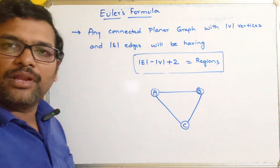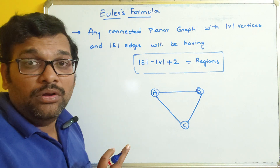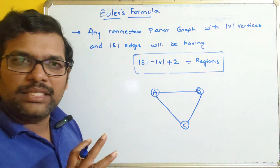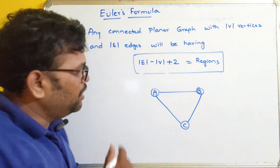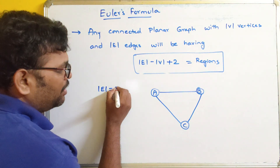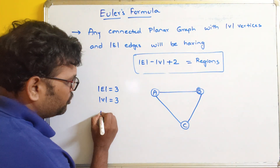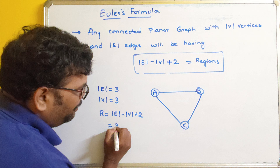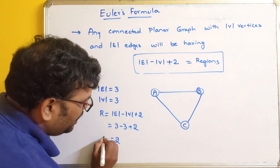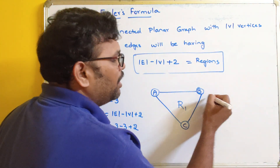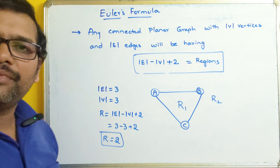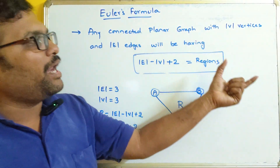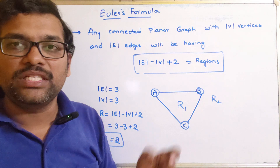Let us extend once more by connecting one more edge. Now there are 3 edges and 3 vertices — a triangle. This is also a connected planar graph. By Euler's formula: 3 minus 3 plus 2 equals 2 regions. We can see R1 as the inner closed triangle region, and R2 as the outer region. The outer surface is always considered one region. So we get 2 regions — the formula is satisfied.